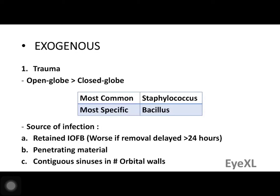Trauma is the foremost cause of exogenous endophthalmitis. Open globe trauma is more likely to cause it than closed globe injury, as the organisms have an easier entry pathway. The most common organism is Staphylococcus epidermidis, but the most specific organism for trauma is Bacillus cereus. A retained intraocular foreign body worsens outcomes, especially if removal is delayed beyond 24 hours. The penetrating material itself may carry organisms into the eyeball.